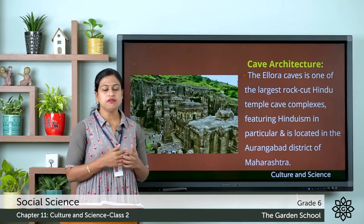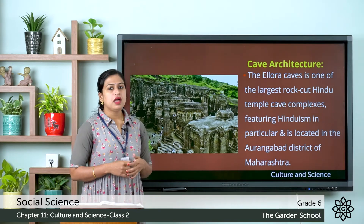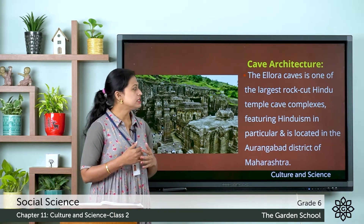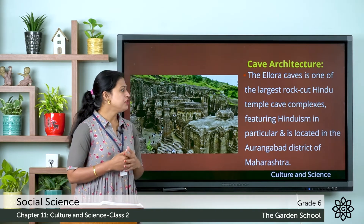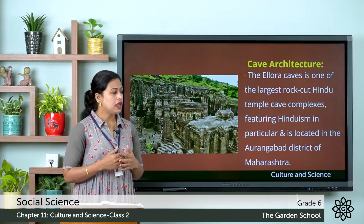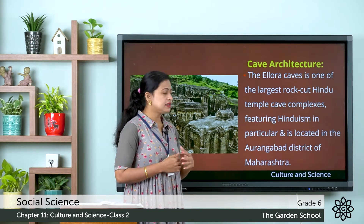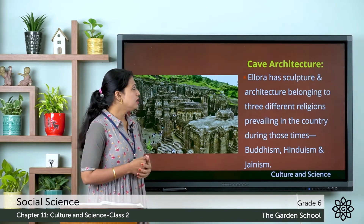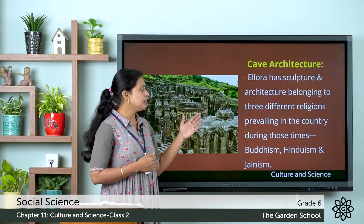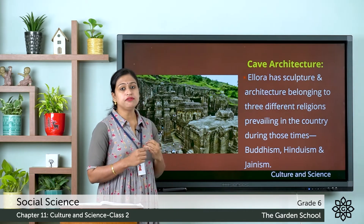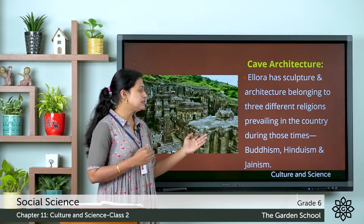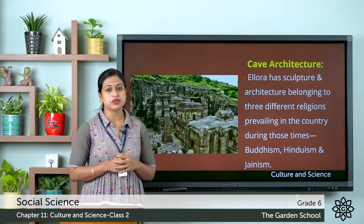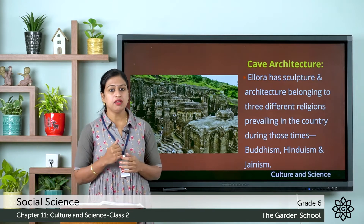The next famous cave is the Ellora caves. The Ellora caves form one of the largest rock-cut Hindu temple cave complexes featuring Hinduism, and it is located in Aurangabad district of Maharashtra. In these caves you can see sculptures and architecture belonging to three different religions that existed during those times — that is, Buddhism, Hinduism and Jainism.